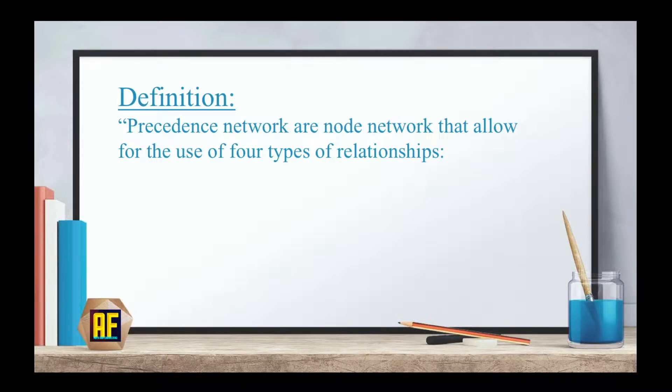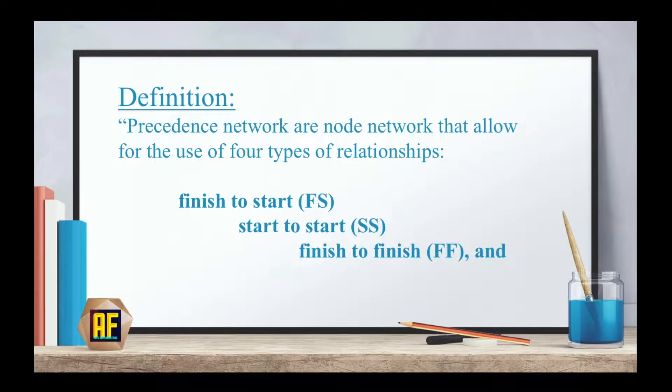A precedence network is a node network that allows for the use of four types of relationships: finish to start, start to start, finish to finish, and start to finish. We will be going over an example and explaining exactly what we mean here.